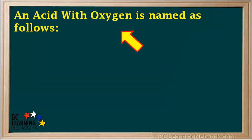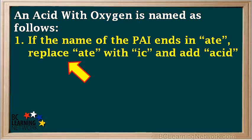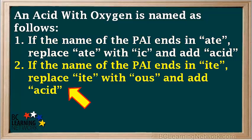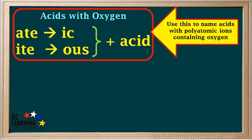An acid with oxygen is named as follows. All acids with oxygen contain a polyatomic ion with oxygen. If the name of the polyatomic ion ends in -ate, replace -ate with -ic and add the word acid. If the polyatomic ion ends in -ite, replace -ite with -ous and add the word acid. We can summarize this as: -ate goes to -ic acid, and -ite goes to -ous acid.